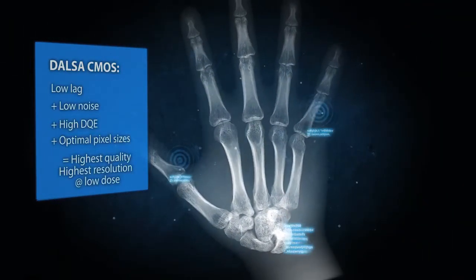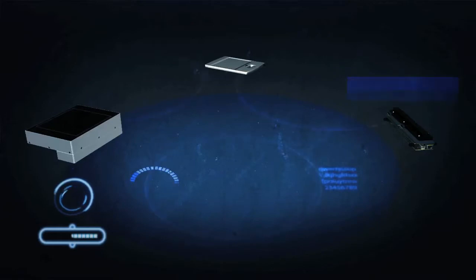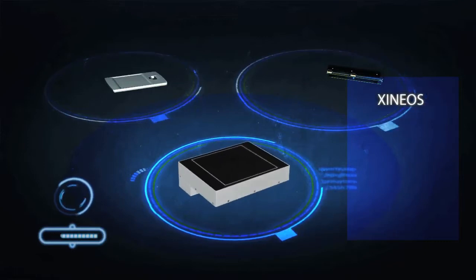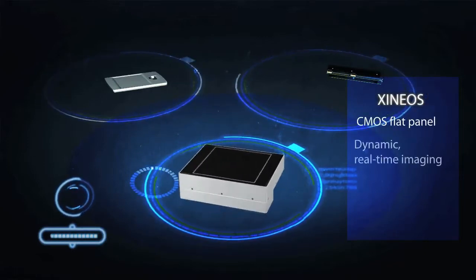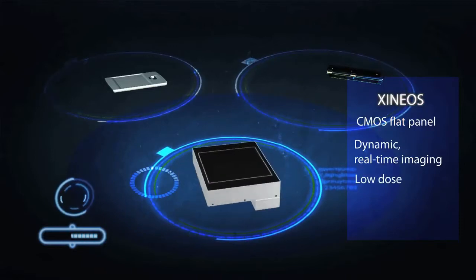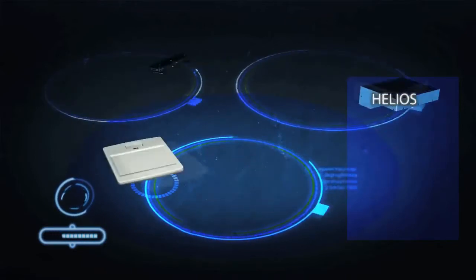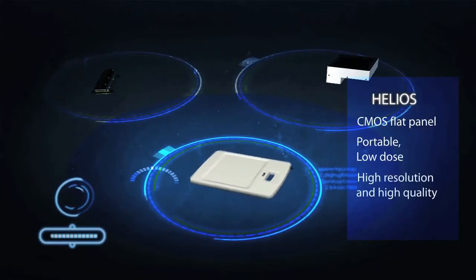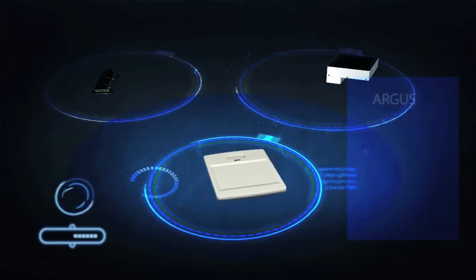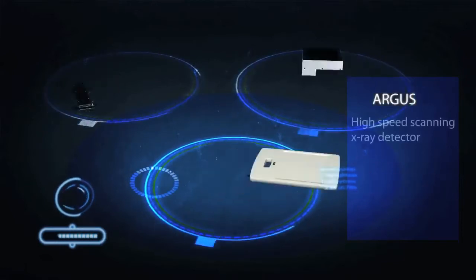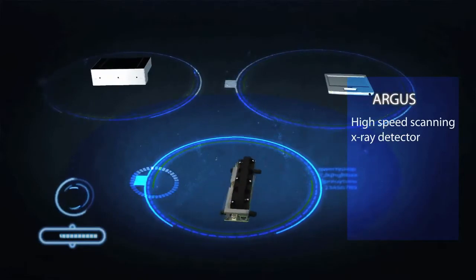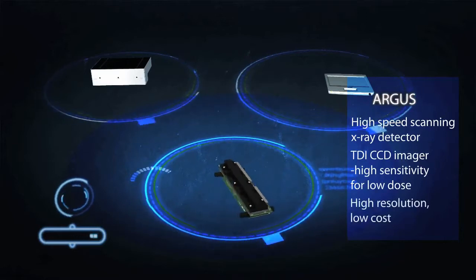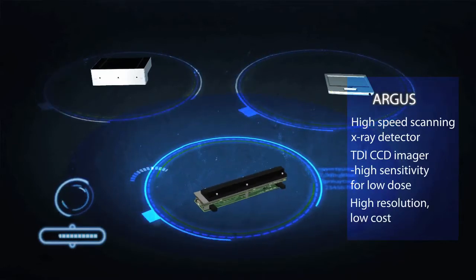Teledyne DALSA's x-ray detectors consist of three families. Xinios is a new family of dynamic CMOS flat panel detectors designed for high speed real-time low dose video applications in medical and dental imaging. Helios is a CMOS flat panel detector designed for portable applications that require the highest resolution and image quality in still images. Argus is a high speed scanning x-ray detector family based on Teledyne DALSA's TDI CCD technology. Argus has been designed for high resolution performance and low cost in applications such as panoramic dental.